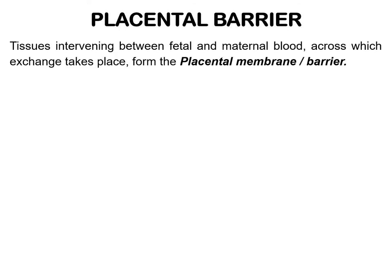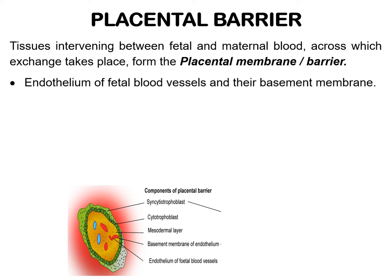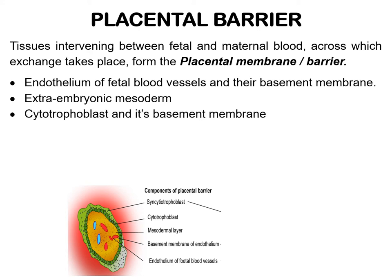In the placenta, maternal blood circulates through the intervillus spaces, whereas the fetal blood circulates through the blood vessels of chorionic villi. Thus these two blood streams do not mix with each other. The tissues which intervene between the maternal and fetal blood constitute the placental membrane or the placental barrier. All exchange of gases, nutrients, and fetal waste products take place across this barrier. The structures constituting the placental barrier from fetal to maternal side are: endothelium of fetal blood vessels and their basement membrane, extraembryonic mesoderm, cytotrophoblast and its basement membrane, and syncytiotrophoblast.